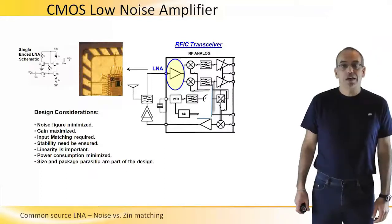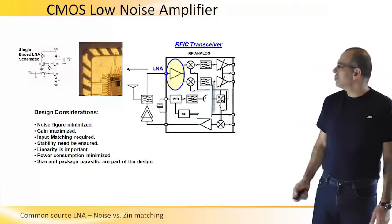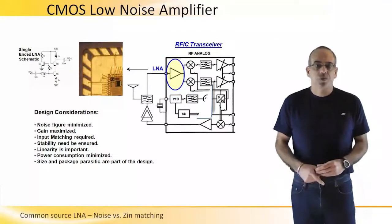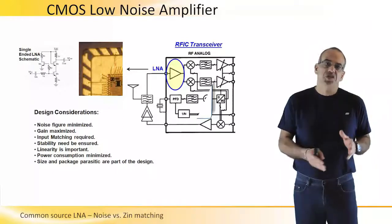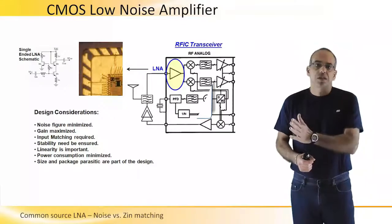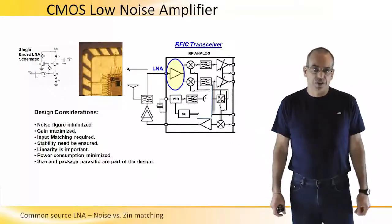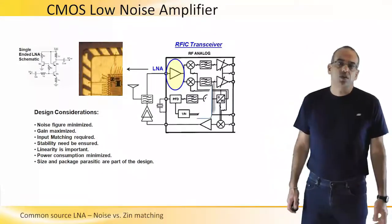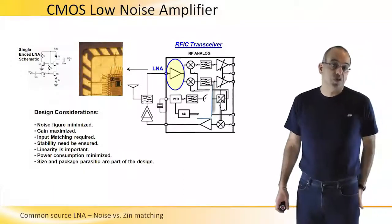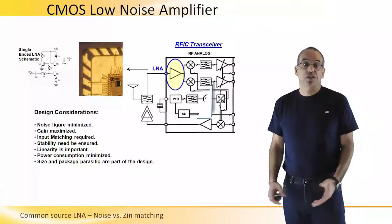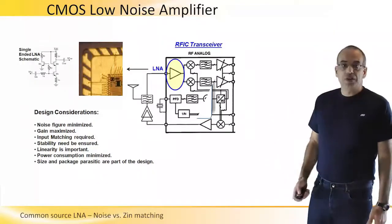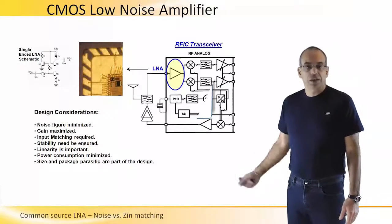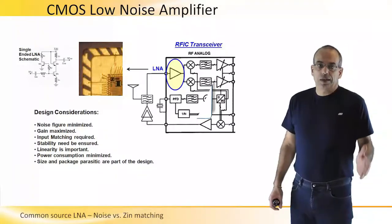CMOS low noise amplifiers are typically found at the front end of the RF receiver. The low noise amplifier is the first stage in the receiver, ensuring sufficient gain and signal-to-noise ratio for the detected signal to be further propagated through the receive channel. Key design considerations include achieving a minimum noise figure at the operating frequency and for the allowed current consumption, while maximizing gain to maintain signal-to-noise ratio.